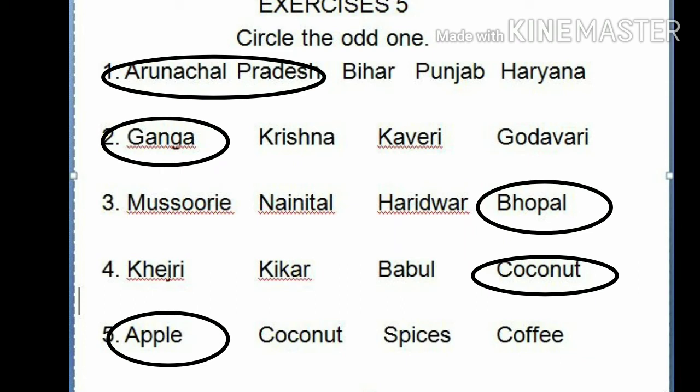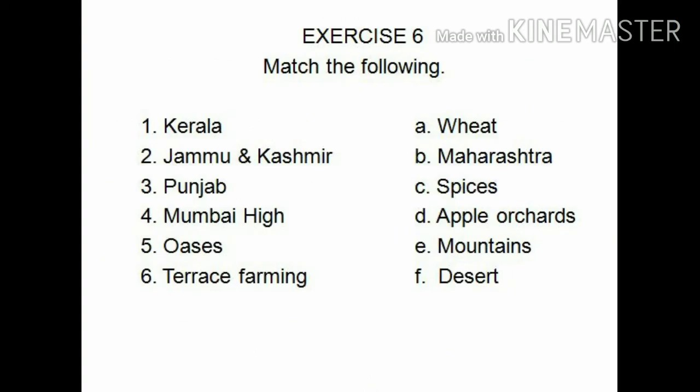Now come to exercise C: Match the following. I will read two columns, A and B, then read the answers. Column A: Number 1 - Kerala, Number 2 - Jammu and Kashmir, Number 3 - Punjab, Number 4 - Mumbai High, Number 5 - Oasis, Number 6 - Terrace farming.